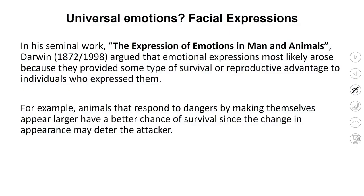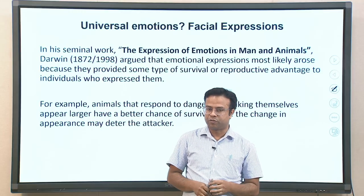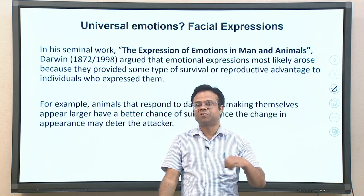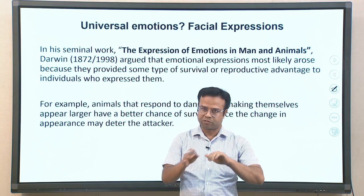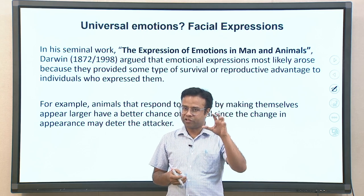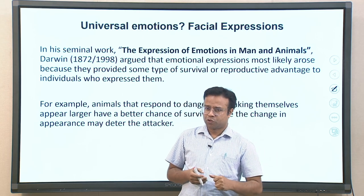Are there universal facial expressions across cultures? One of the earliest works on basic universal emotion was Charles Darwin's work. In his book Expression of Emotions in Man and Animals, published in 1872, he argued that emotional expression most likely arose because it provided some survival and reproductive advantage to individuals — some adaptive, evolutionary function. That was one of the main reasons why emotions evolved.